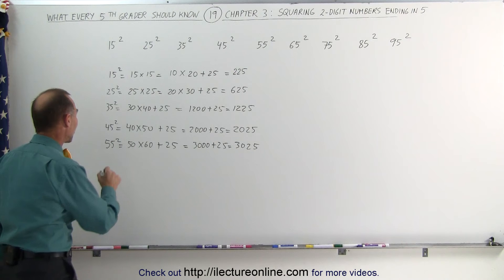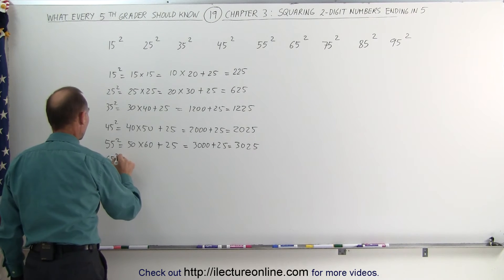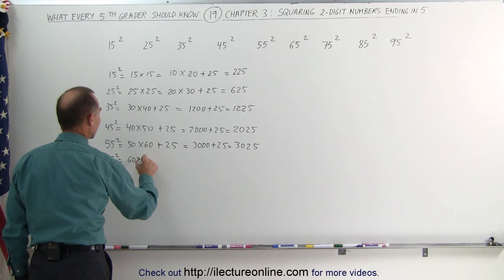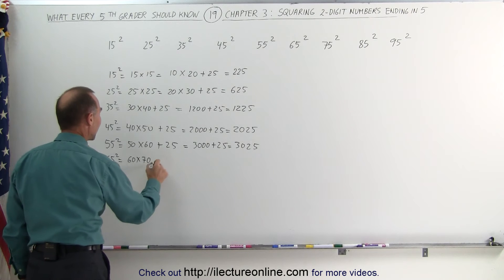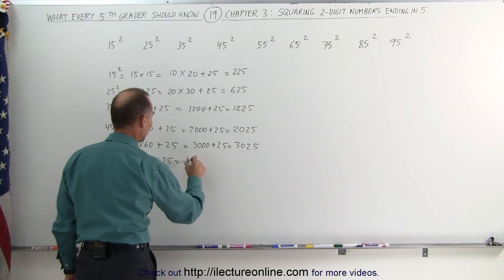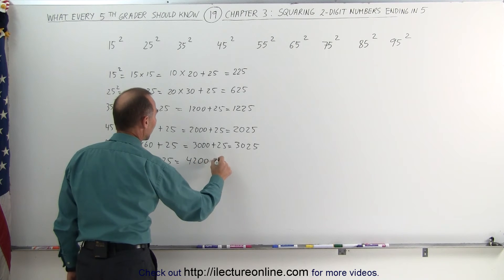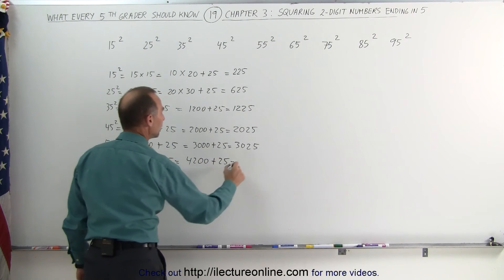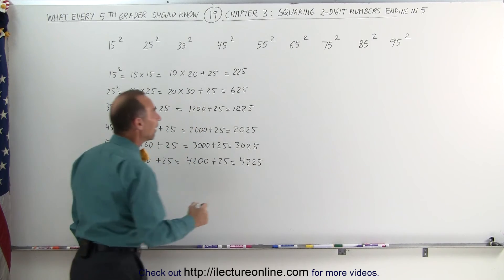Now let's try 65 squared. 65 squared, that's the same as 60 times 70. Again, subtract 5, and add 5, add 25 to that. 6 times 7 is 42, add 2 zeros, plus 25, that would be 4,225.